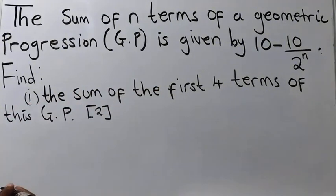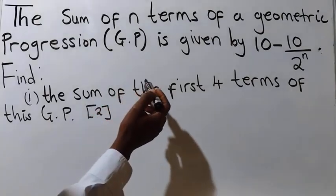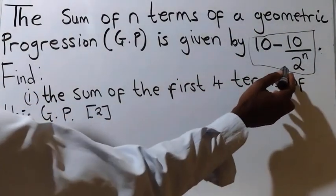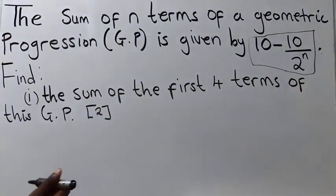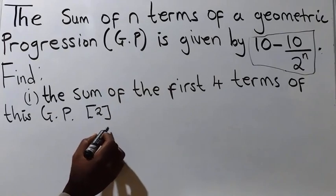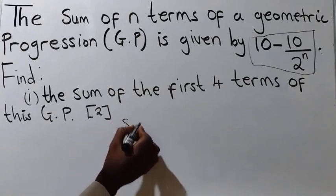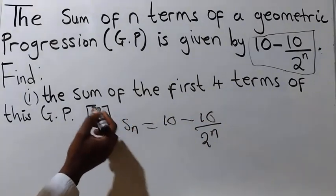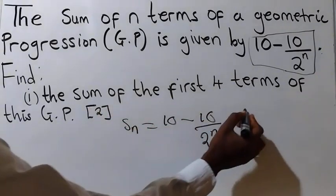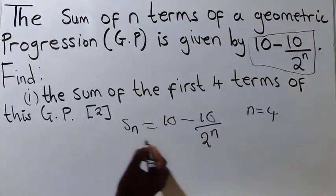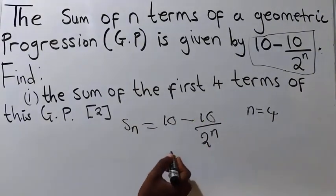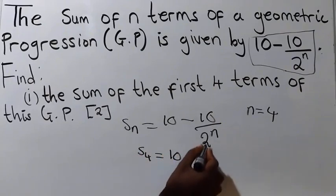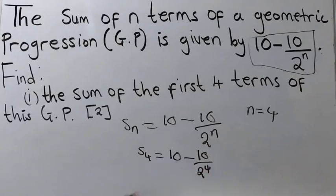To answer the first one, we have been given the sum formula. The sum of this GP is given by Sₙ = 10 minus 10 over 2 to the power n. We are finding the sum of the first four terms, so we replace n with 4. It will be S₄ = 10 minus 10 over 2 to the power 4.